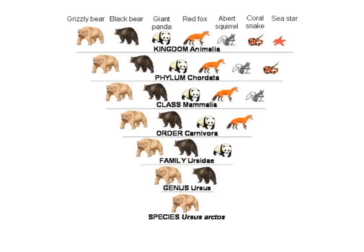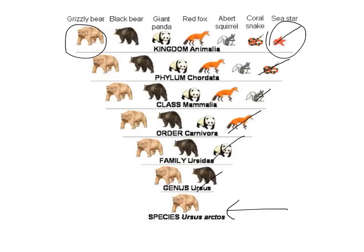Another example: we start in the kingdom of Animalia, the animal kingdom. There's a wide variety of organisms within it — it includes things students don't even realize are animals, like grizzly bears sitting next to starfish. As we go down, you see things begin to drop off. The sea star is not part of this phylum. The snake is not part of the mammal class. Then the squirrel drops off, then the fox, then the panda, then the black bear — and we're left with the brown bear. We can see how these organisms are related based on their classification according to the theory of evolution.